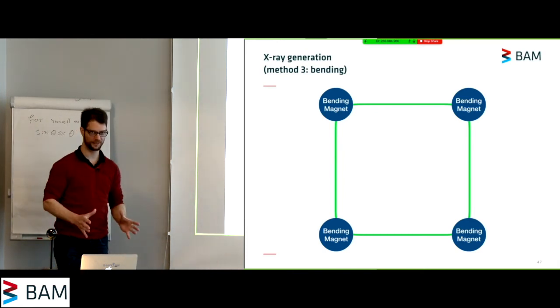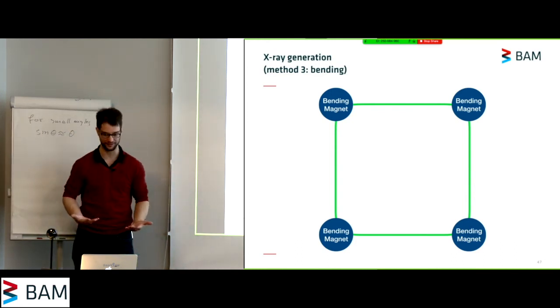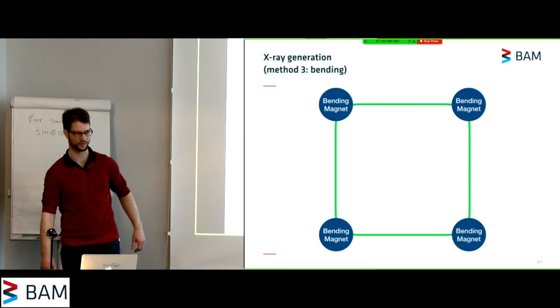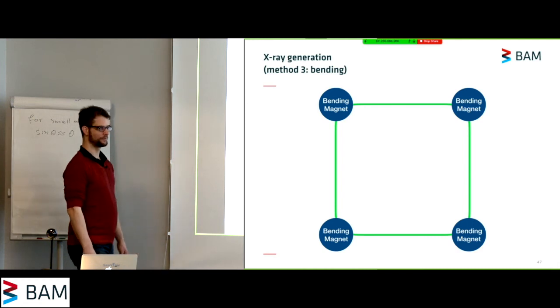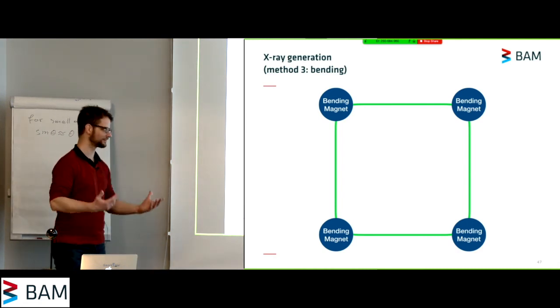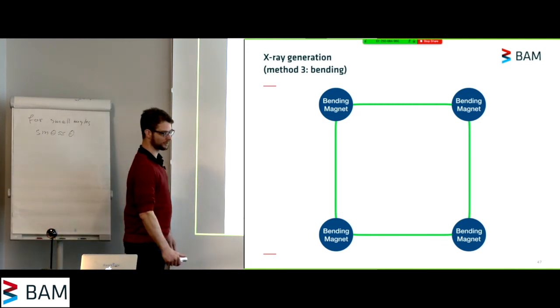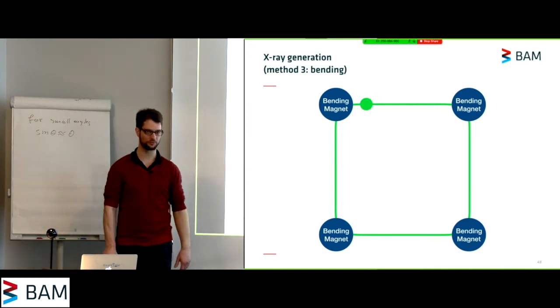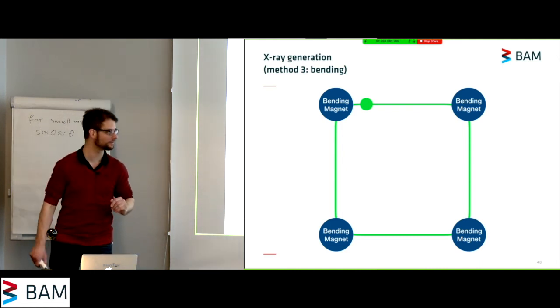Now, the problem is that getting the electrons to the speed necessary to give you these X-rays takes a lot of energy. These electrons are usually traveling with an energy of 2 to 8 gigaelectron volts, and accelerating them to that speed, it's tough. So once you have them, you really like to keep them. This is why synchrotrons are usually built in a circle or a square. So you can make a synchrotron with four bending magnets.